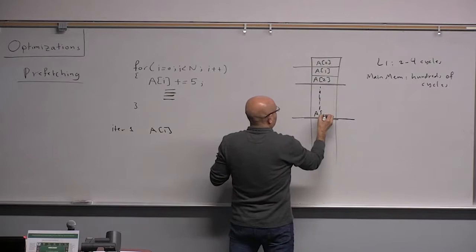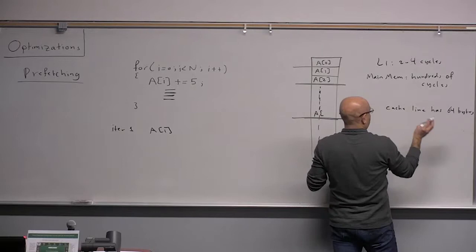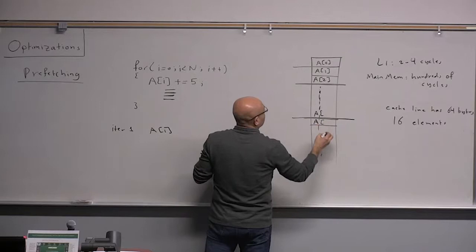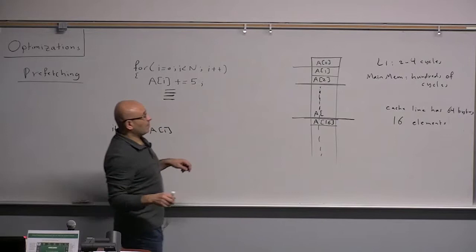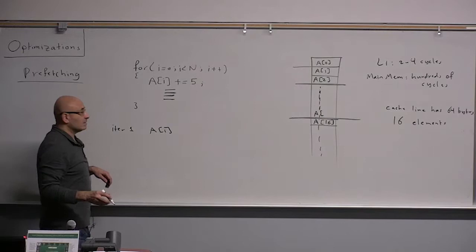If we assume that the cache line has 64 bytes, let's say 16 elements, then A of 16 is going to miss in the cache. So when we get to A of 16, we are going to miss in the cache. What if we pre-fetch it ahead?